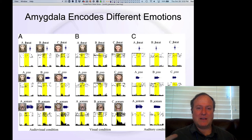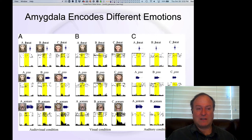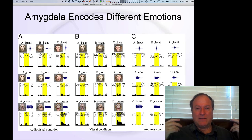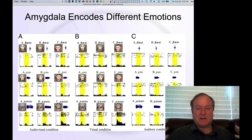We have more threats that we need to differentiate and deal with than opportunities and positive things. A lot of people in the scientific literature and even in the popular press tend to think of the amygdala as a fear-only or negative-only area. But it absolutely has representations and neurons that encode positive states as well — they're just in the minority.